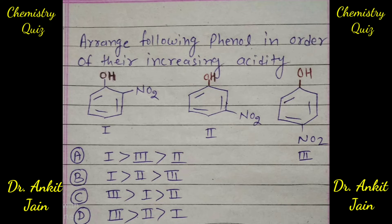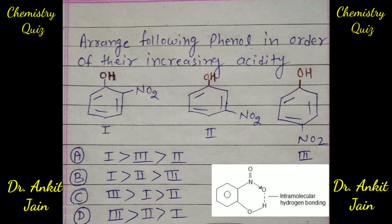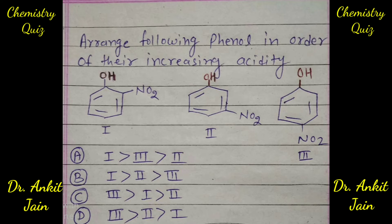In the first structure, you can see that this is orthonitrophenol. Orthonitrophenol will have intramolecular hydrogen bonding, and this will affect the release of the proton, reducing its acidity.